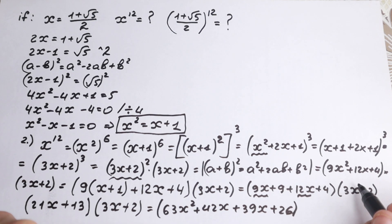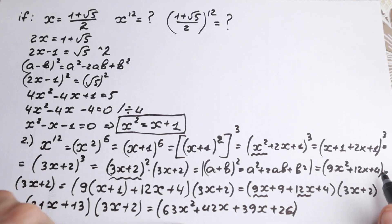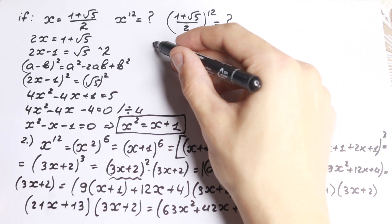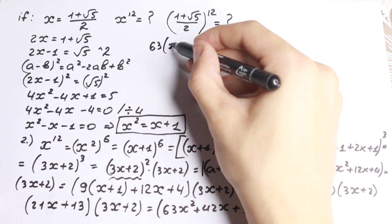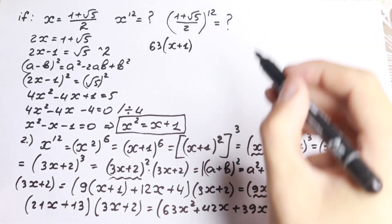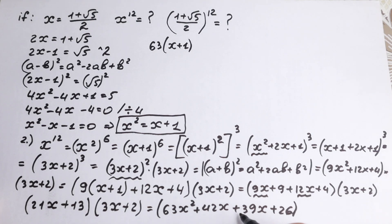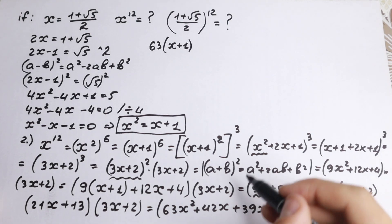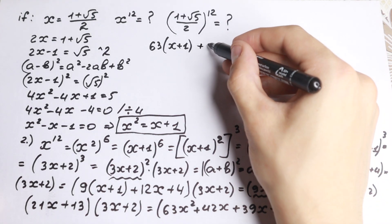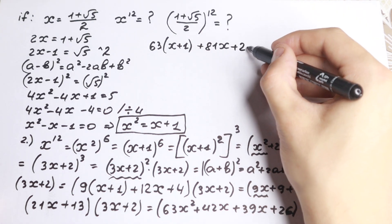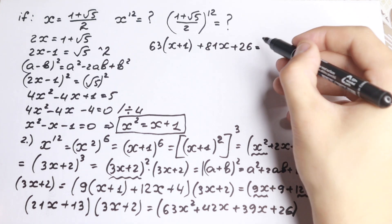In our case, x squared can again be written as x plus 1. So we replace it: 63 times (x plus 1), then plus 42x plus 39x. Combining: 63x plus 63, plus 81x plus 26.